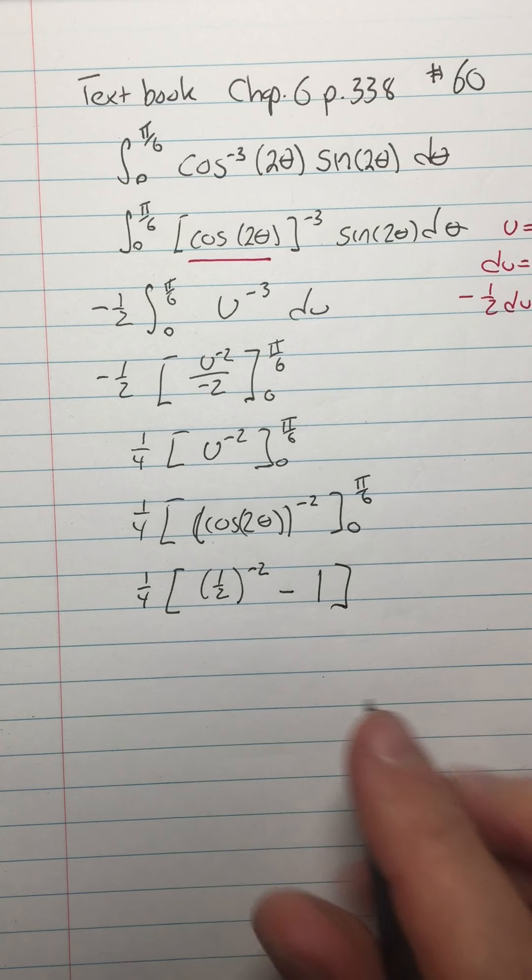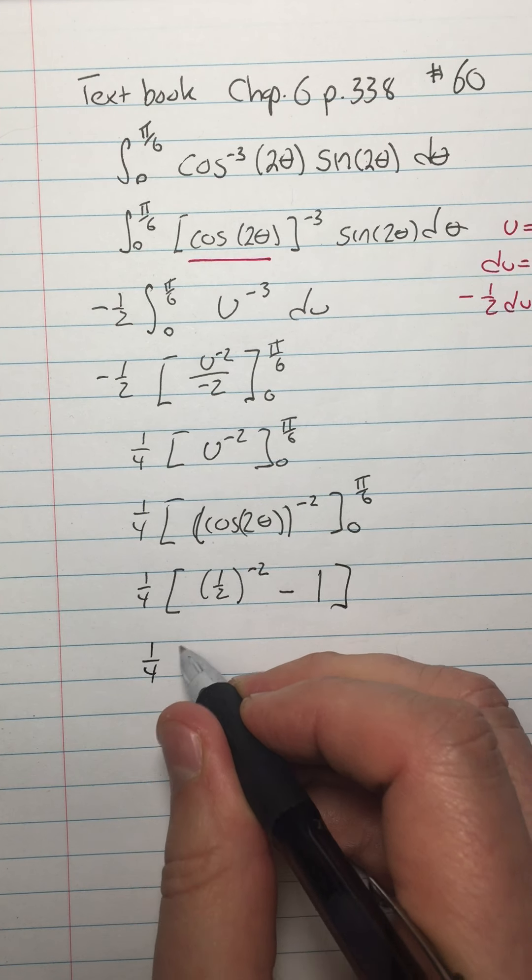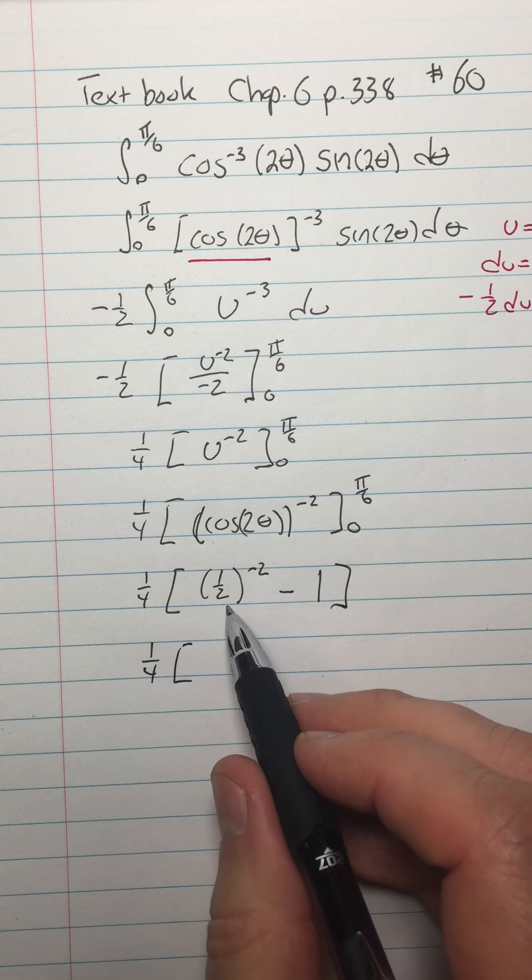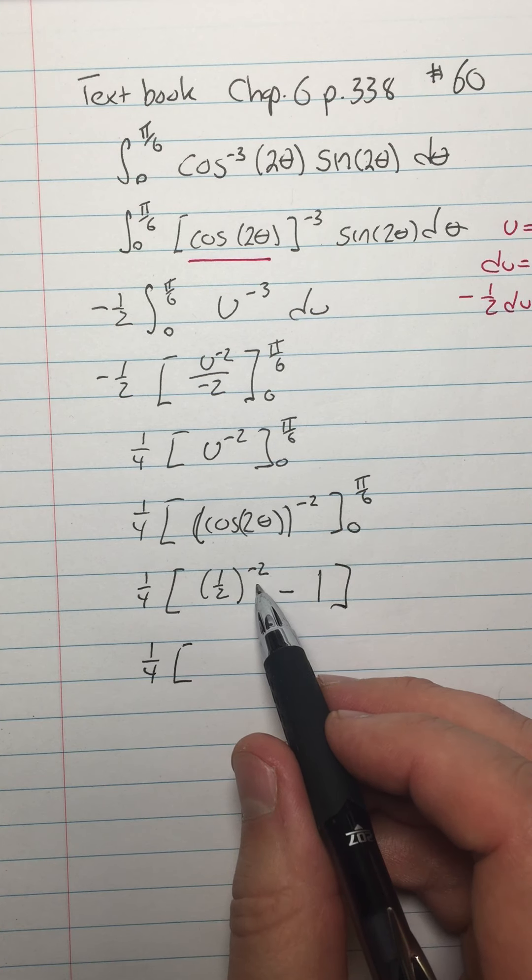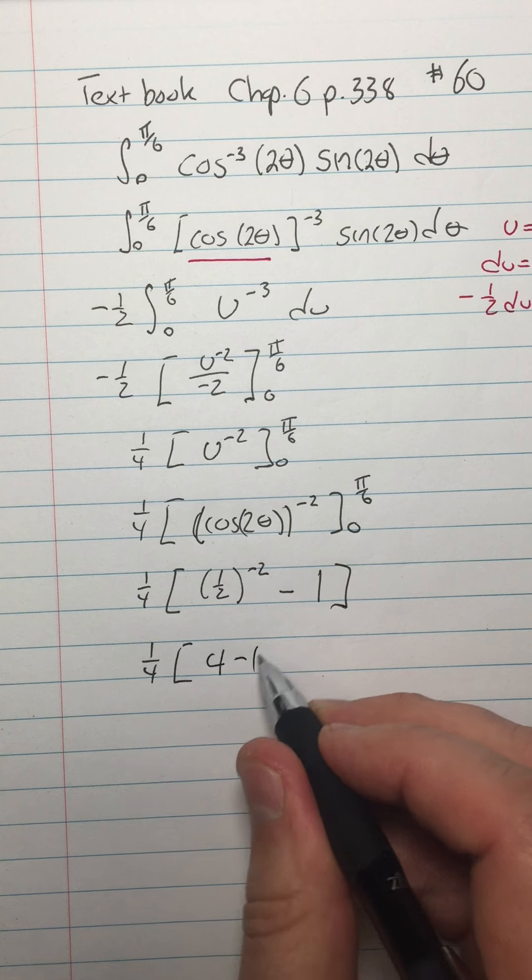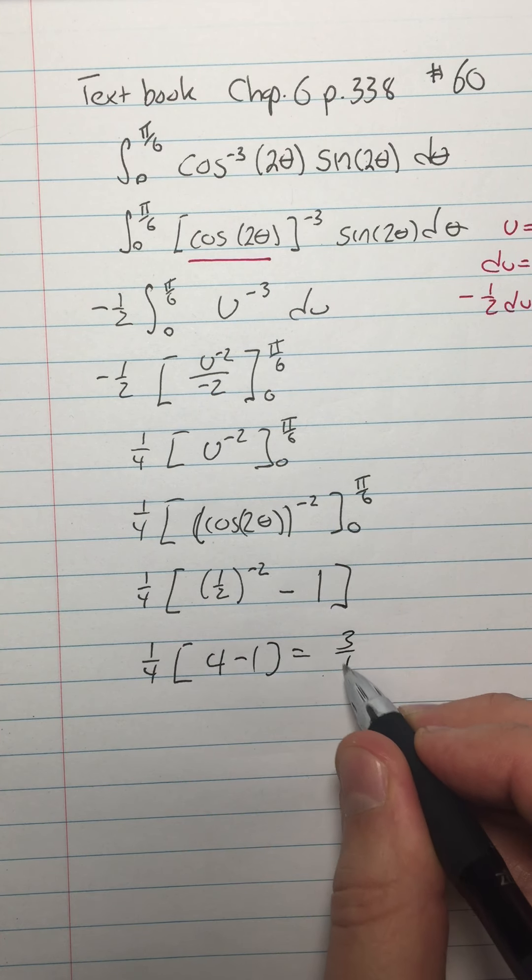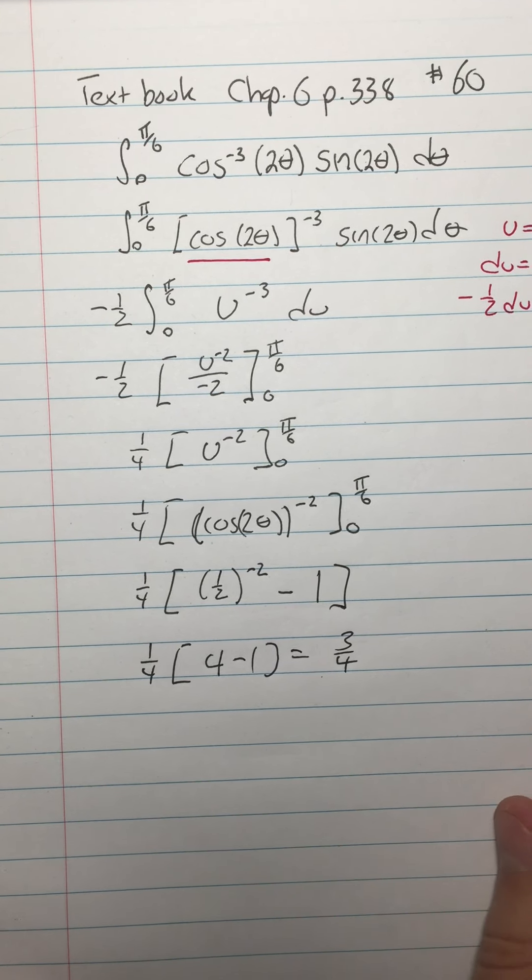All right, so then I have one-fourth times one-half to the negative 2 is 2 squared, which is 4 minus 1, and it equals 3 fourths. Ta-da! There you go.